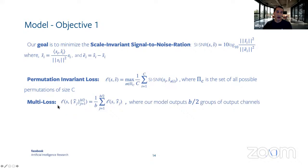As we saw earlier, we also apply a multi-loss — basically we apply the loss after each one of the MulCat blocks, and the total loss is the sum over all blocks.